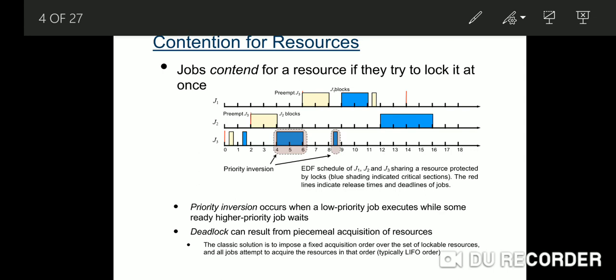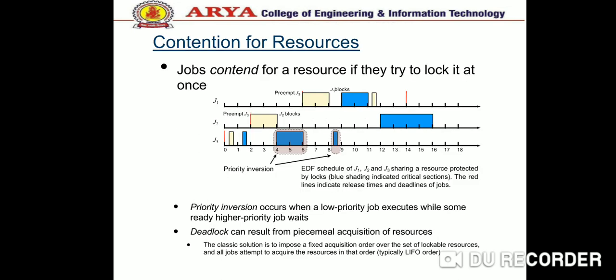Job J3 has three overlapping critical sections that are properly nested. A critical section that is not included in any other critical section is an outermost critical section. The critical section determined by LR1 and UR1 in J3 is an example. In the case where R has only one unit, we omit the value of the number of units and use simple notation.